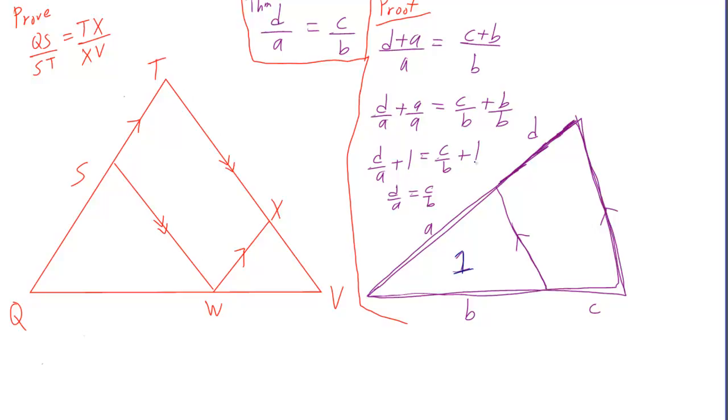But then you can subtract 1 from both sides. So I forgot to mention, going from d over a plus 1 to d over a, you have to subtract 1. So once you subtract 1 from both sides, you get what you were trying to prove, that this outer segment actually does go with the inner part.